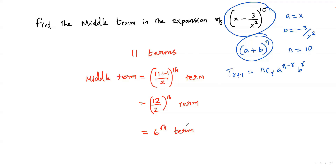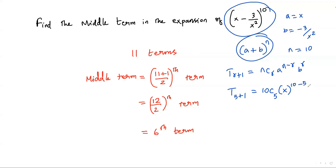We need to find the 6th term, so we plug in r = 5, since 5 + 1 = 6. This gives: T6 = 10C5 · x^(10−5) · (−3/x²)^5, where 10 − 5 = 5 for the exponent of x, and r = 5 for the exponent of (−3/x²).